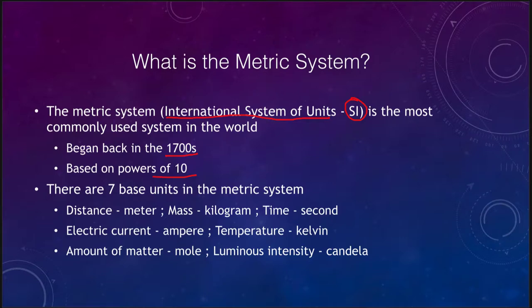For example, in the English system there are 16 ounces in a pound and 12 inches in a foot. In the metric system they're always the same.